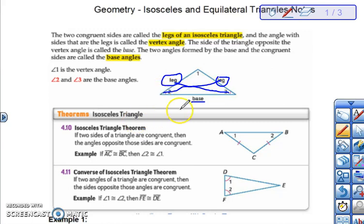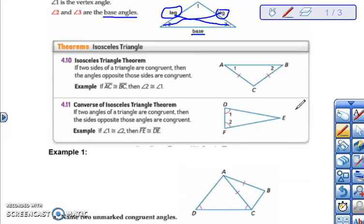So the angles across from the legs are going to be congruent. Those are going to be called our base angles. Anytime we have two congruent sides we must have congruent angles. That also works going the other way, so if you are given a triangle with two equal angles it means that two of the sides must also be congruent.